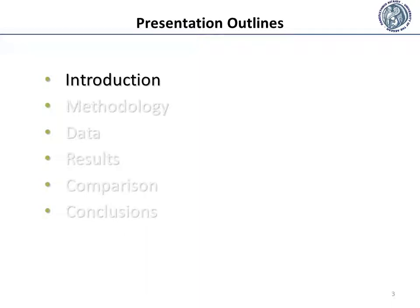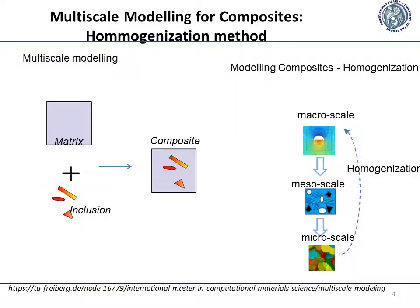Let me start with some general information. A composite material is a material made from two or more constituent materials with significantly different mechanical or chemical properties that, when combined, produce a material with characteristics different from the individual components. In mechanics, multiscale modeling is aimed at the calculation of material properties or system behavior on one level using information or models from different levels. On each level, particular approaches are used for the description of a system.